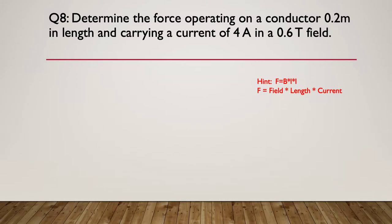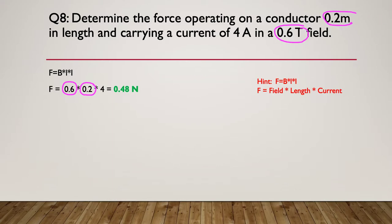Here's the hint: F equals B × I × L — F being force, L being length, I being current. So F equals B times I times L. Our B (flux density) is 0.6, our L is 0.2 metres — remember it must be in metres — and the current is 4 amps. So 0.6 × 0.2 × 4 gives us 0.48 Newtons. Don't forget the units — it's in Newtons.